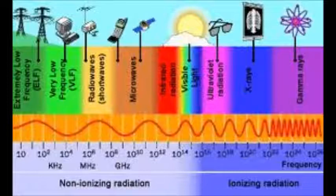Radio waves exist between 3 kilohertz, 3000 and 300 gigahertz, 300 billion oscillations per second.